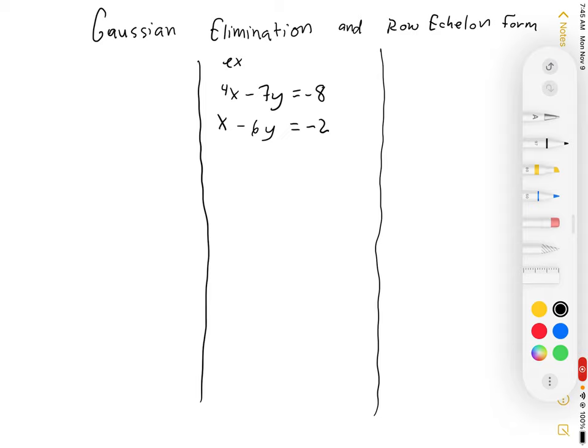Gaussian elimination is a method of solving systems from matrices. But first, you have to take a system and turn it into a matrix. So let's go back and remember standard form.